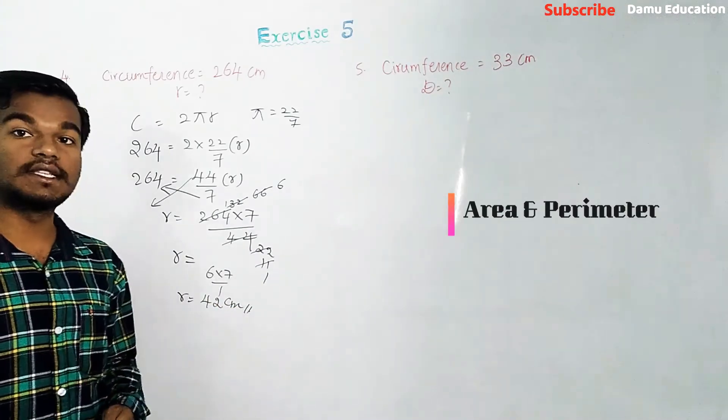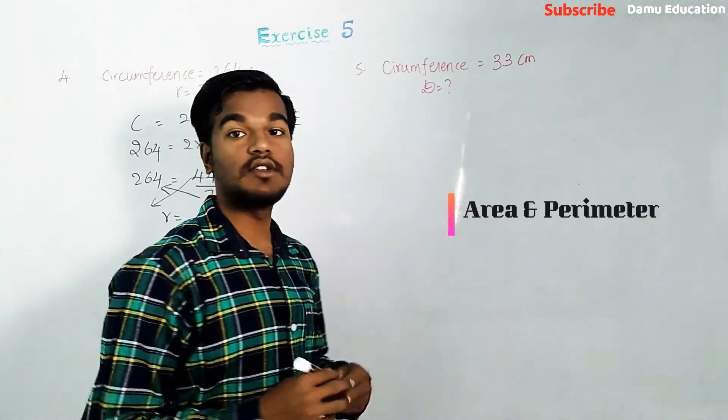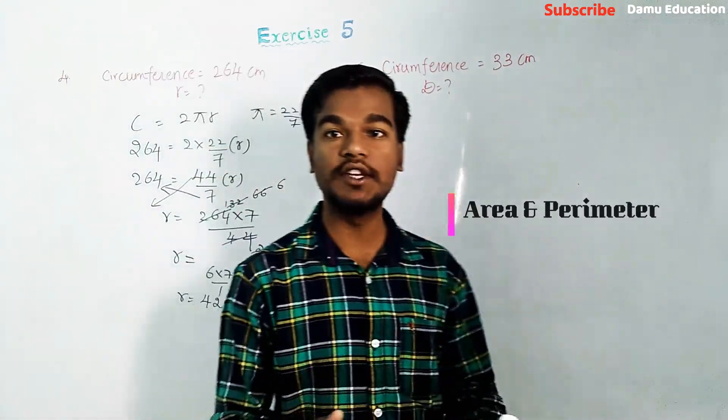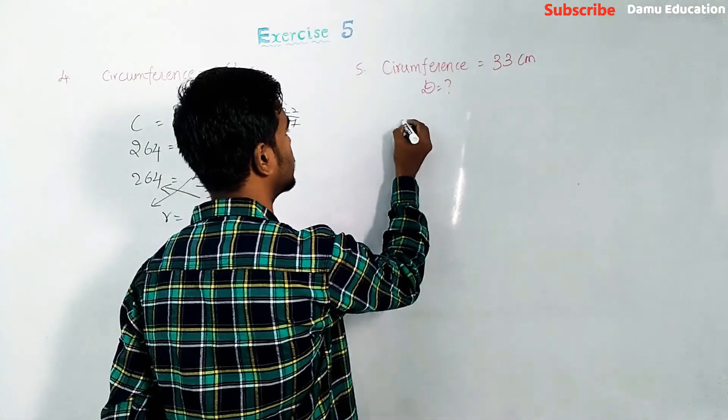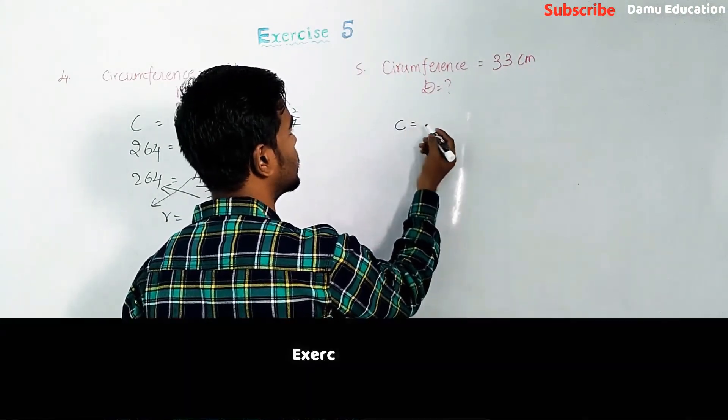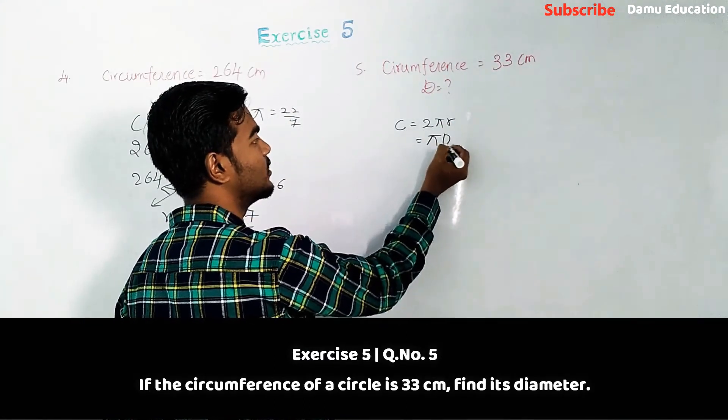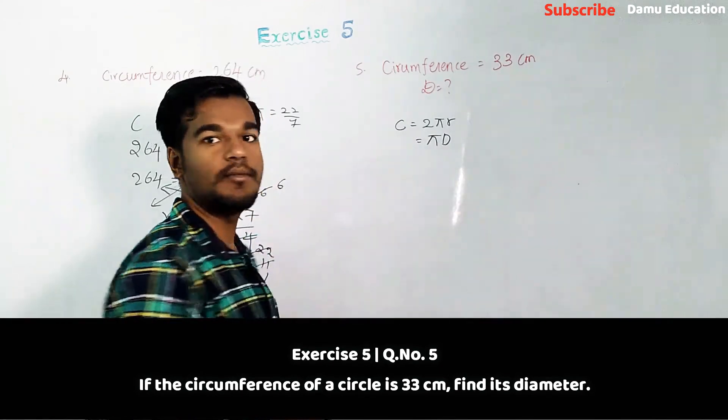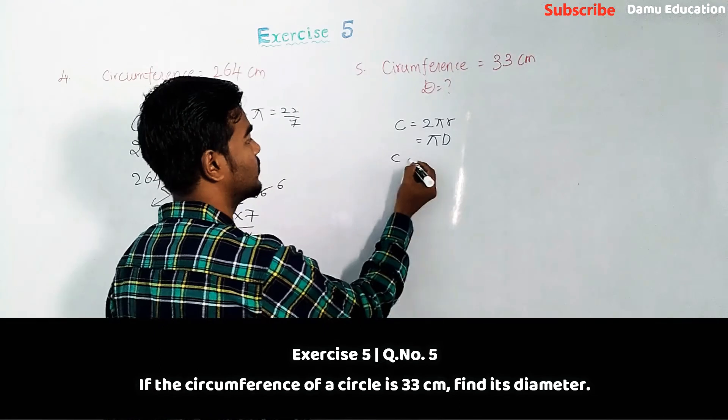Next question: circumference equals 33 centimeters, and we need to find the diameter. Circumference is nothing but, in place of 2πr, we use πd. So you can take pi as 3.14 or 22 by 7, whatever it is.